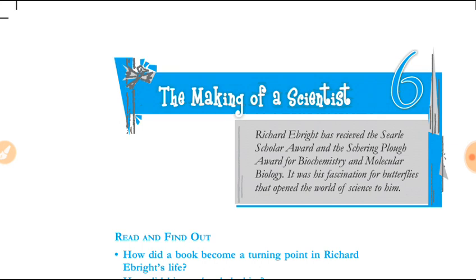We will see the character sketch first. 'The Making of a Scientist' is a story about a great scientist Richard H. Bright. He had a habit of collecting butterflies, rock fossils, and coins since he was a kid. He started scientific research on the study of butterflies, and his curiosity and will to win for the right reasons made him successful.